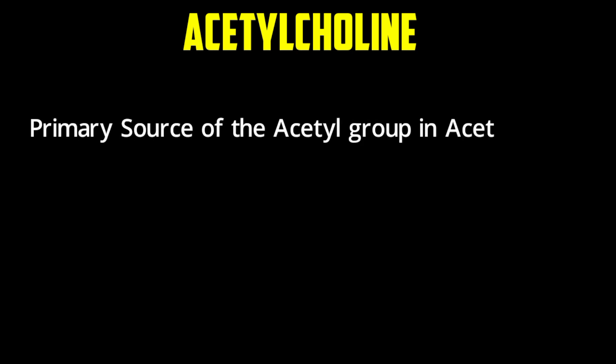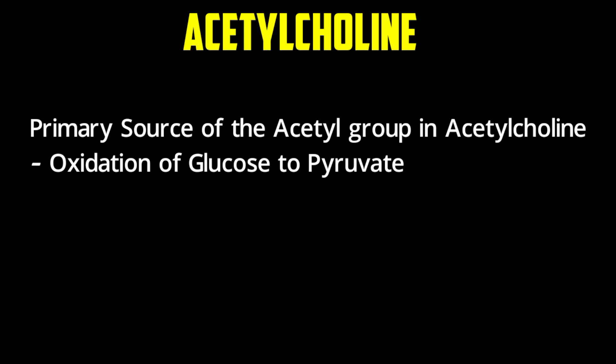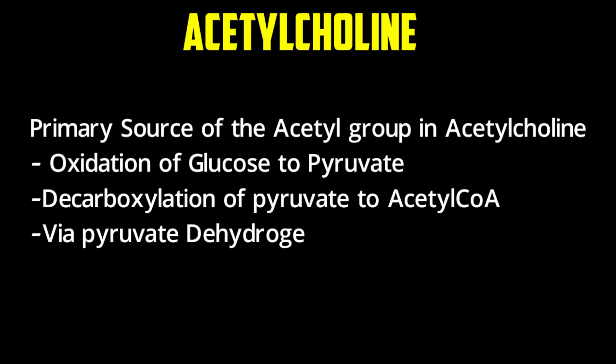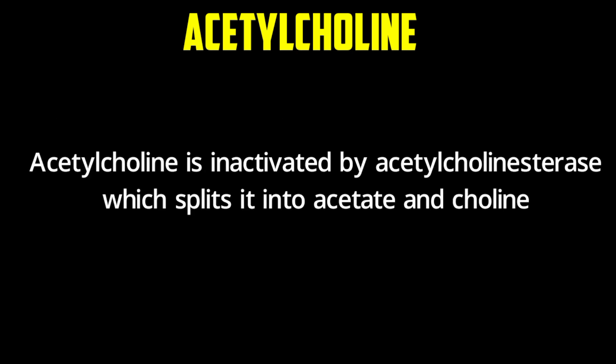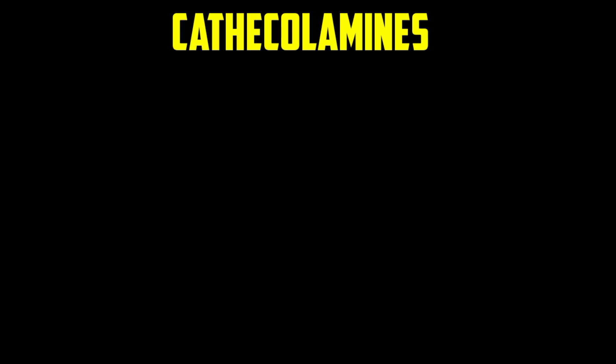The acetyl group used for acetylcholine synthesis is derived primarily from glucose oxidation to pyruvate and the carboxylation of pyruvate to form acetyl-CoA via the pyruvate dehydrogenase reaction. Acetylcholine is inactivated by acetylcholinesterase.